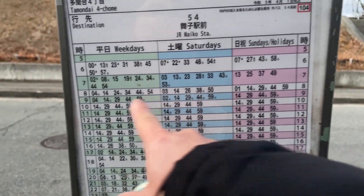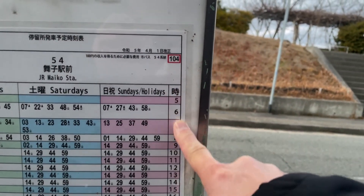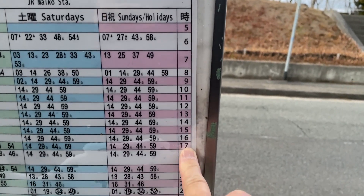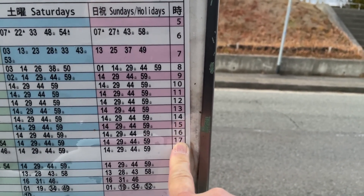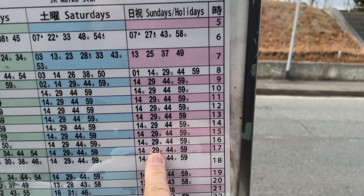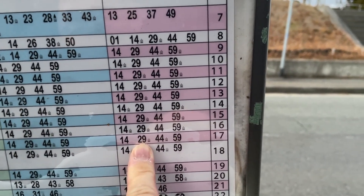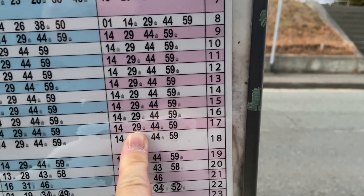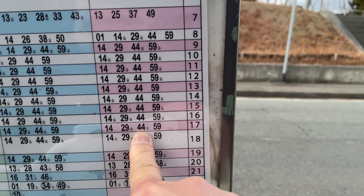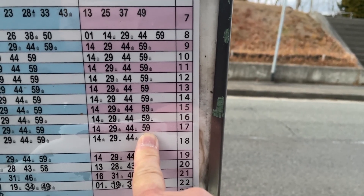So just look at the Sunday schedule on this side to my right. 17 represents 5 PM. I could take the 5:29 — and Japanese buses are on time — or the 5:44, or the 5:59 bus.